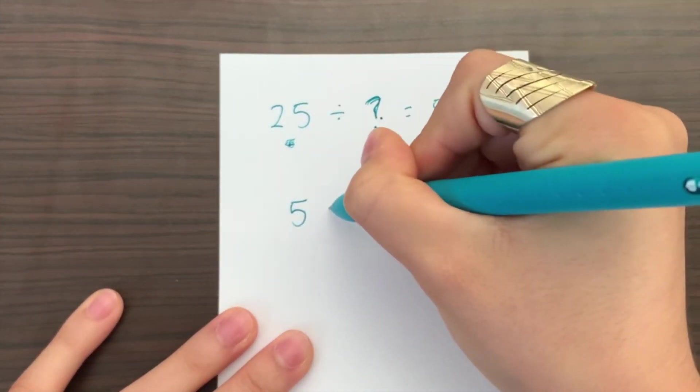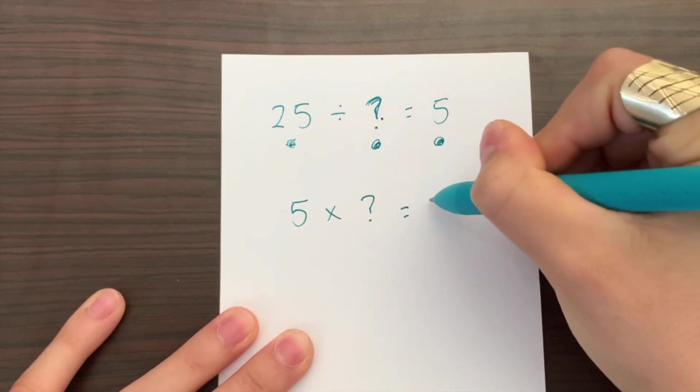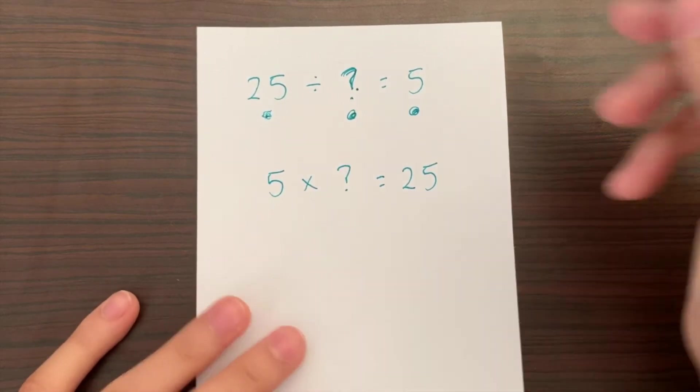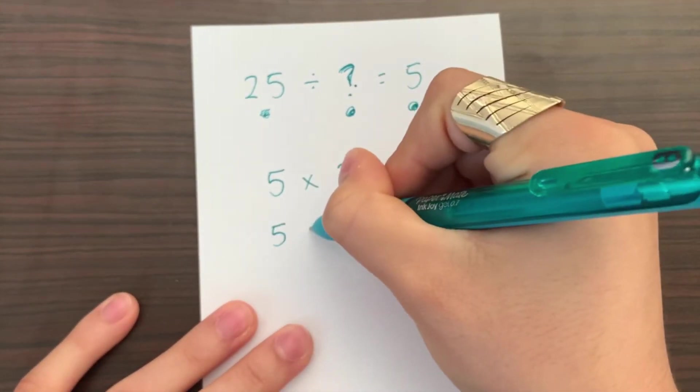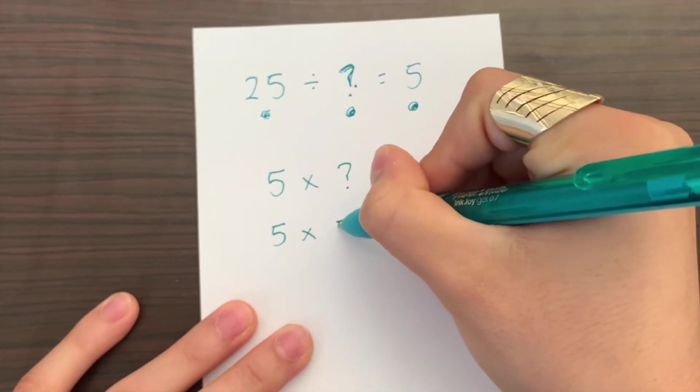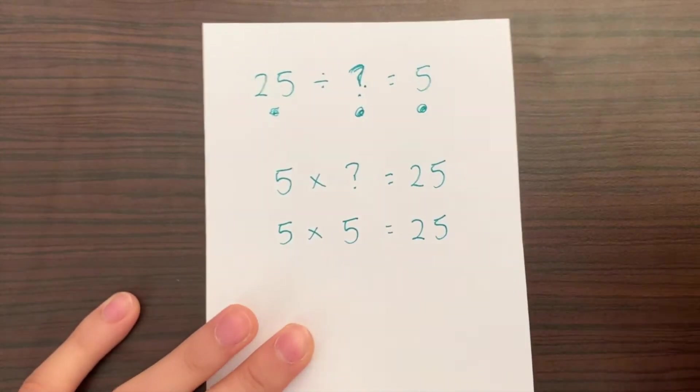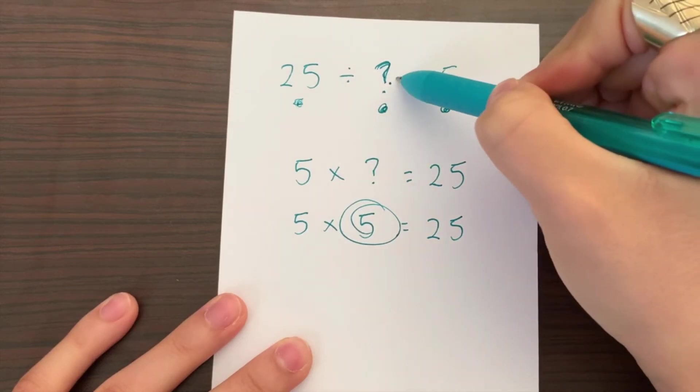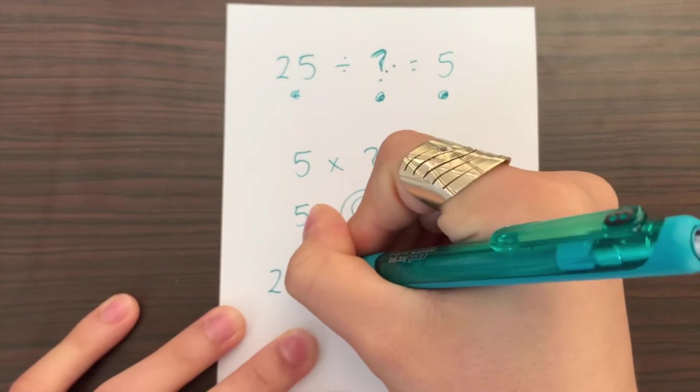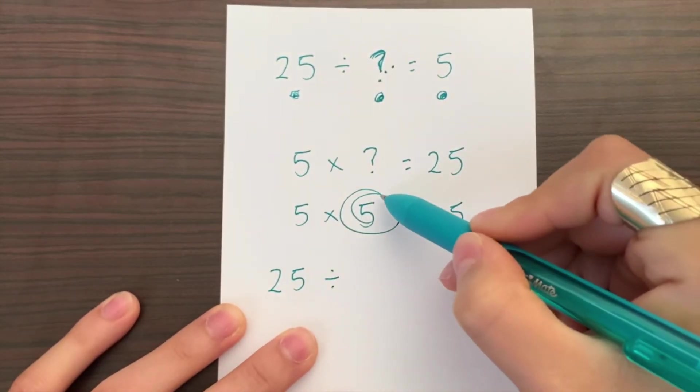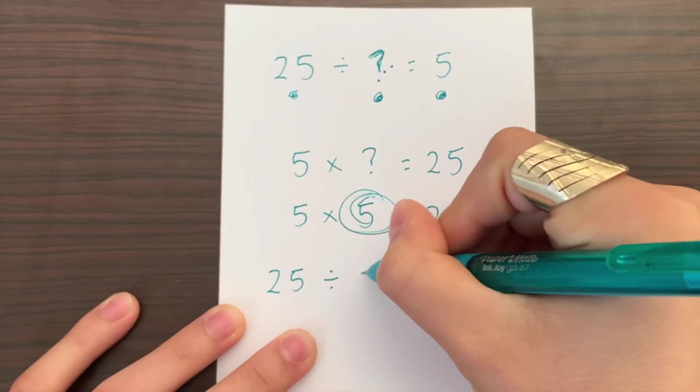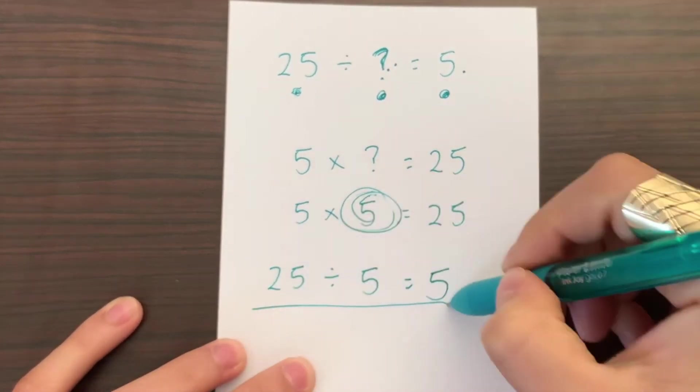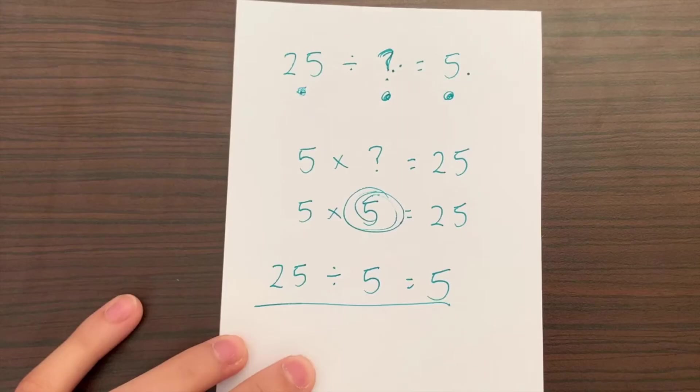So then we would write it out as 5 times what equals 25. Again, if you're really good at multiplication, you can just go ahead and find that 5 times 5 equals 25. So then this missing number that you found there, you can plug it into your division problem. So then it would look like 25 divided by 5 gives you 5. And that's how you would find the missing number to your division problem.